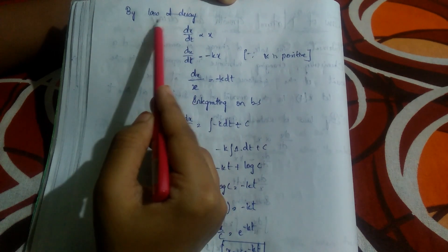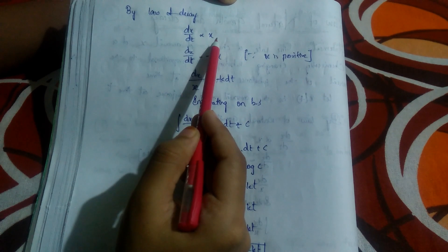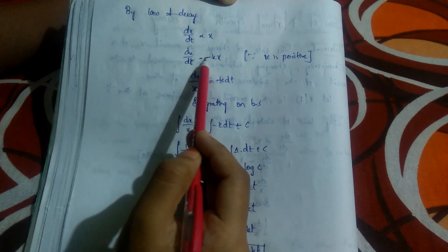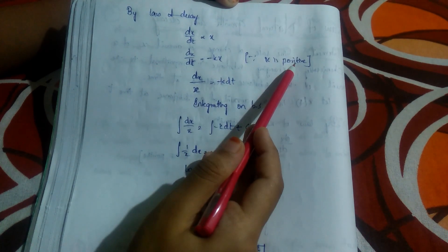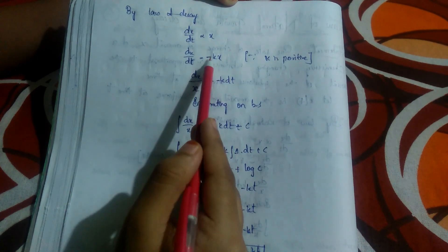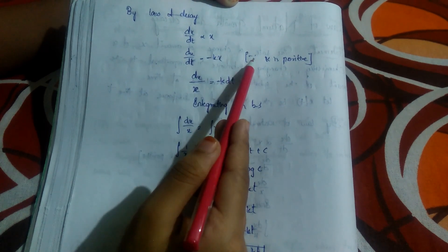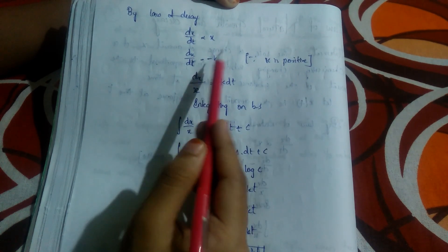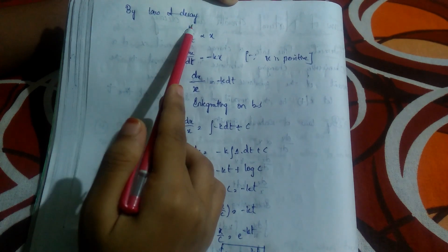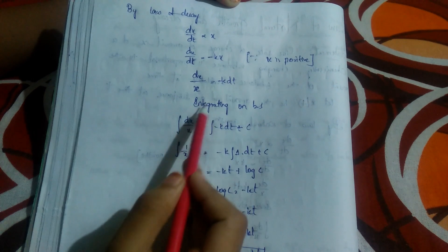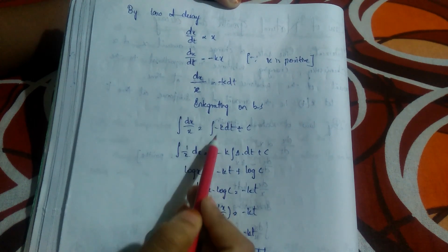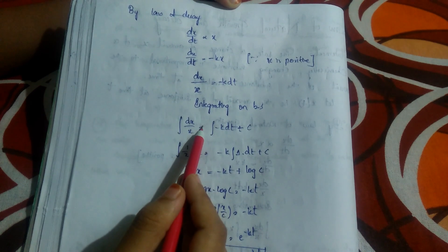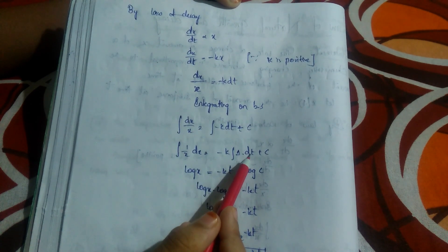Similarly, for the law of decay: dx/dt is directly proportional to X, so dx/dt equals kx, but here we get minus kx, where k is positive. The minus sign indicates decay. So dx/x equals minus k·dt. Integrating both sides: integration of dx/x equals integration of minus k·dt plus C.